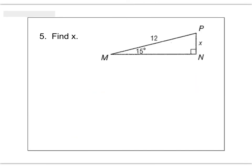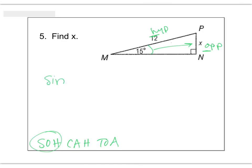Pause and try this one on your own. Your angle is 15 degrees, X is the opposite side, and 12 is the hypotenuse. Using SOHCAHTOA, choose the ratio with O and H — that's SOH, and S stands for sine. Sine of 15 equals X over 12. Note we say 'sine' even though it's abbreviated. Multiply both sides by 12 and type 12 times sine 15 into your calculator. Your answer should be 3.11. There's no label, so you're done.